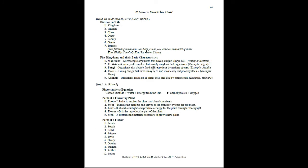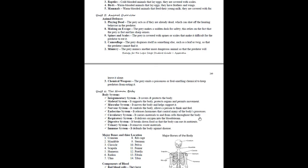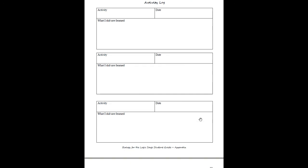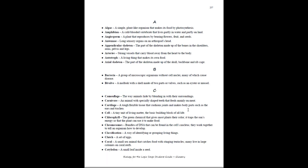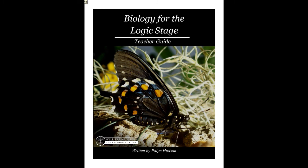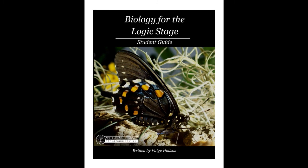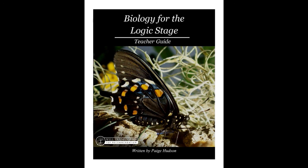In the student's appendix they will have the memory work listed by unit — everything in one easy-to-use place. They'll also have an activity log for recording field trips, nature studies, or any activities done throughout the year, with a couple of pages for that purpose. And then they will have the glossary, with all vocabulary listed in alphabetical order. That's your full tour of the Logic Stage teacher's guide and student guide. If you have questions, please email support at elementalscience.com, and I trust you'll have a great year with science using the Logic Stage programs from Elemental Science.